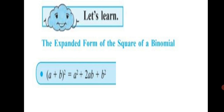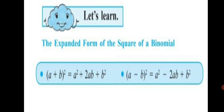We take a plus b and square the whole expression. The whole square is equal to a squared plus 2ab plus b squared. What if there is a subtraction sign between a and b? We have another formula: a minus b, the whole square, is equal to a squared minus 2ab plus b squared.